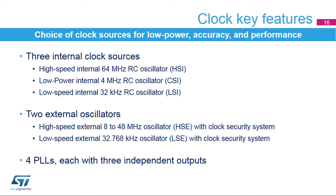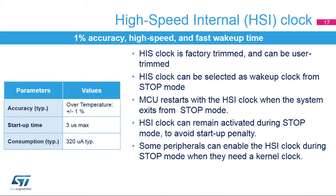The high-speed internal oscillator is a 64 MHz RC oscillator with an accuracy of 1% and a fast wake-up time. The HSI clock is trimmed during production testing and can also be user-trimmed. A dedicated divider allows generation of 64, 32, 16, or 8 MHz clocks. The HSI clock is selected as system clock for the MCU when the system wakes up from system stop mode, and remains powered when the system goes to stop mode to speed up wake-up time. Some peripherals such as I2Cs and UARTs can request the activation of the HSI clock in system stop mode for their own processing; if the HSI is disabled, the RCC automatically enables it and provides the clock to the requesting peripheral.